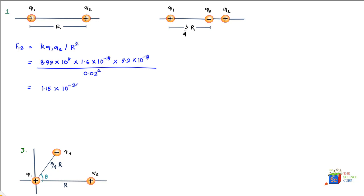This is the magnitude of the force, and we also need the direction. Since both charges are positive, q2 repels q1. We can express this as 1.15×10⁻²⁴ N at 180 degrees from the positive x-direction, or in ij notation as minus 1.15×10⁻²⁴ i — that is, in the negative i direction.